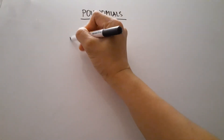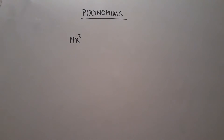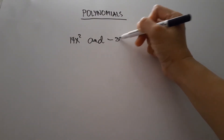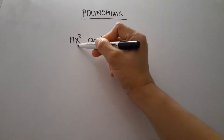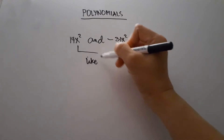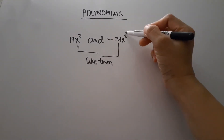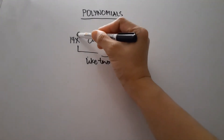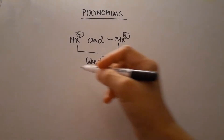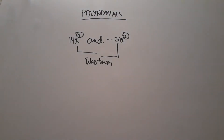Each monomial is called a term of the polynomial. The largest degree of a polynomial is the largest degree of the terms in the polynomial. Terms that have exactly the same powers are called like terms. For example, 14x squared and negative 31x squared are like terms because they have the same variables and exponents. A polynomial is said to be simplified if all its like terms have been combined.